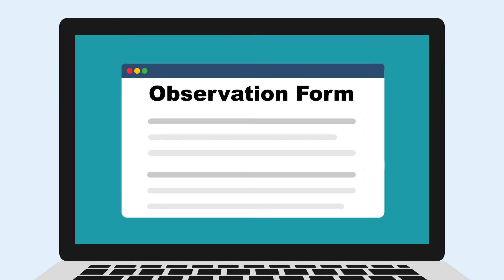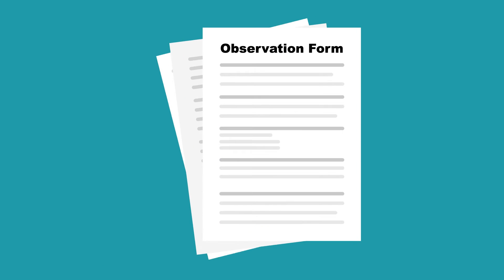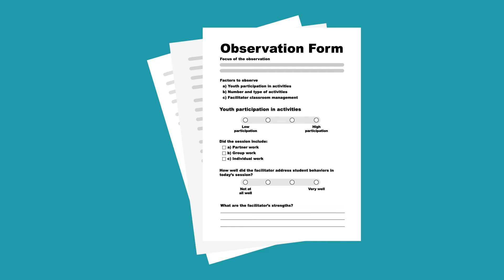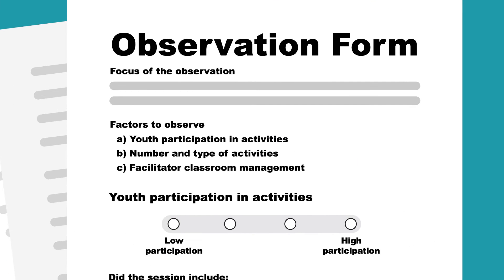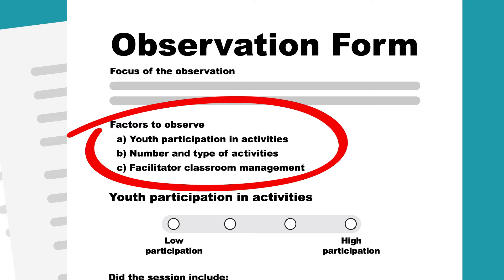Using a standard form for collecting data helps reduce this source of bias. You can use an existing observation form or create your own. Check your curriculum materials or developer's website to see if the developer has provided an observation form. The observation form should identify the focus of the observation and the factors observers should document.